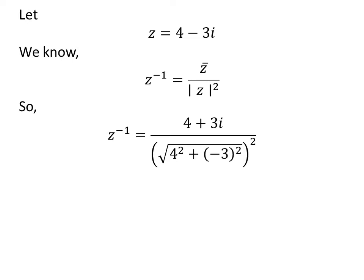multiplicative inverse of z is equal to 4 plus 3 times i upon square of square root of square of 4 plus square of minus 3.